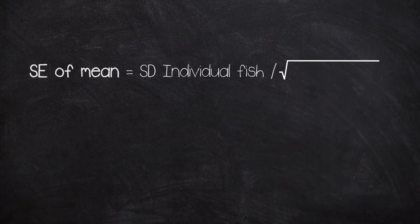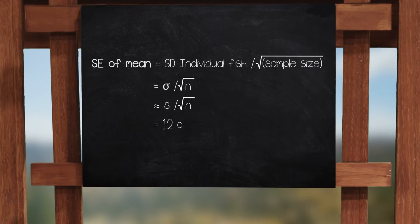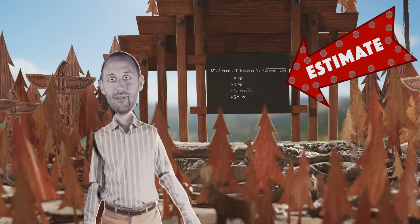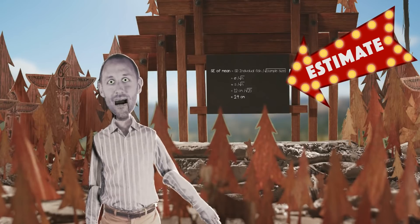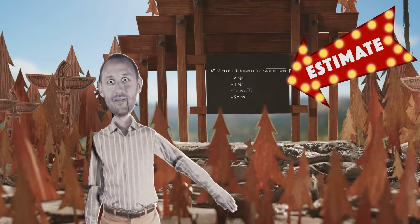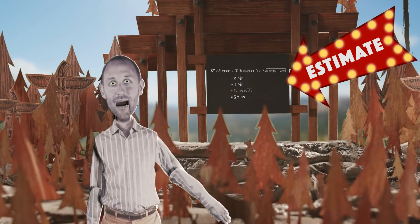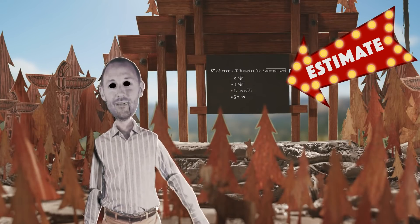Since we don't know the true standard deviation, we will substitute in the sample standard deviation in order to estimate the standard error of the mean. Recall that the standard error of the mean gives us an idea of typically how far a sample mean will deviate from the true mean. We would then know what the sampling distribution of the mean would look like under this null assumption that the true mean is 35 centimeters.